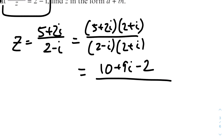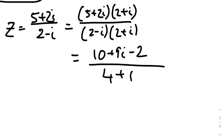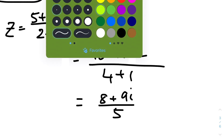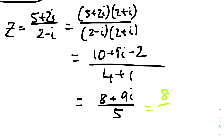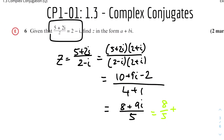The bottom: 2 × 2 = 4, the second and third terms cancel out (2i and -2i), and the last term is -i × i = -1 × -1 = +1, giving 5. So we collect terms: (10 - 2) + 9i over 5, which is 8 + 9i over 5. In the form a + bi, that is 8/5 + (9/5)i.